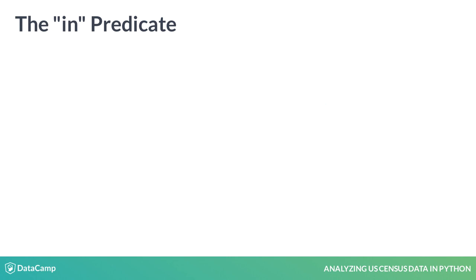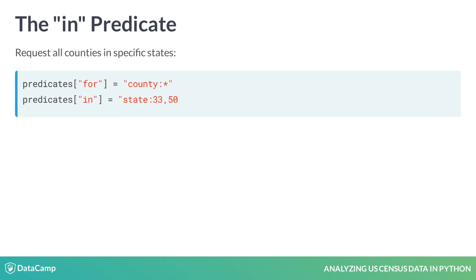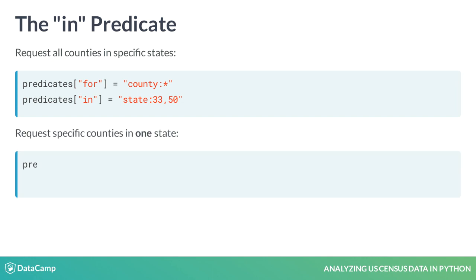We can use this information to specify a containing geography using the optional IN predicate. Here, we request all counties in two states, New Hampshire and Vermont. You cannot use a wildcard with the IN predicate. You can also request specific counties in one state. If you specify GeoIDs in the FOR predicate, you cannot use the IN predicate to request more than one containing geography.